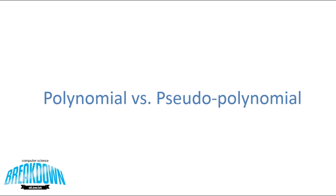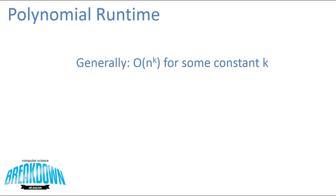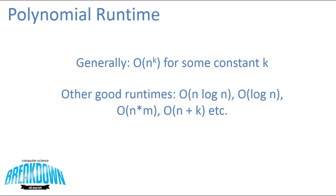First we're going to try to define polynomial runtime. You're all familiar with Big O notation, and very generally you can consider a polynomial runtime as something that is O(n^k) for some constant k. I'm going to use polynomial as an umbrella that also encapsulates other good runtimes — logarithmic or linear — because all of these are polynomial or better. We're using polynomial as this boundary that meets pseudo-polynomial, because there's a very subtle difference between these two.